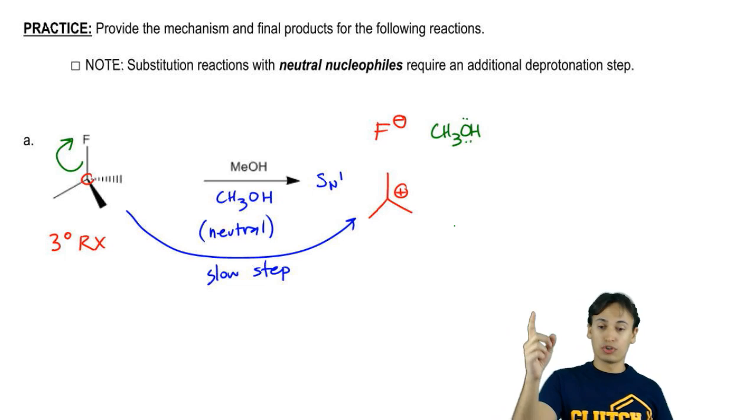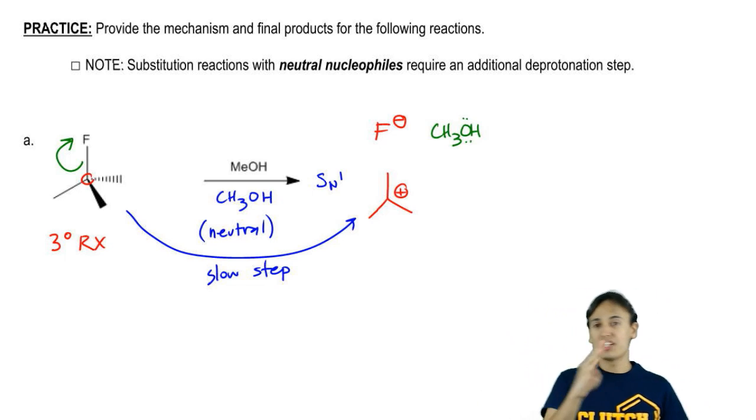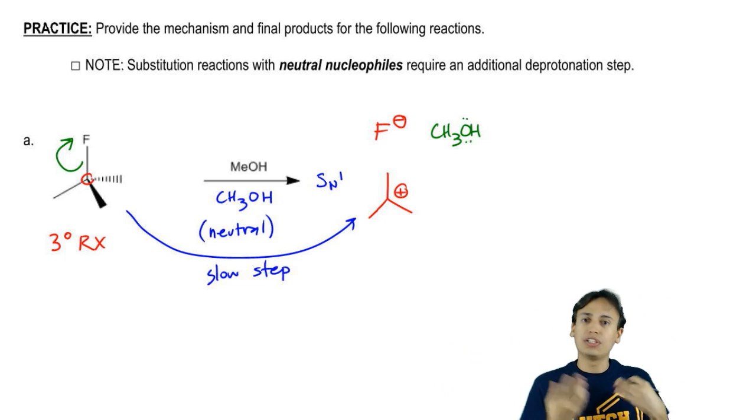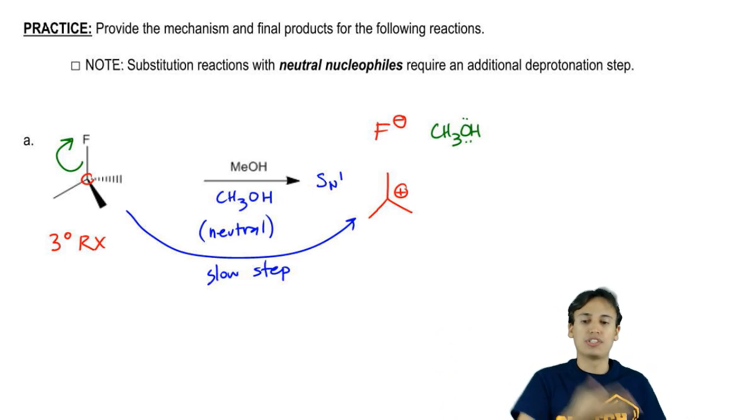Now could F negative go ahead and re-attack that carbon? Sure, but that's just going to take me back to where I started. So that reaction doesn't really make sense for me to draw because that would just be going back to the original and then it would dissociate again.